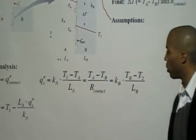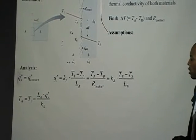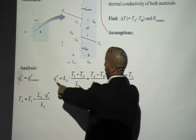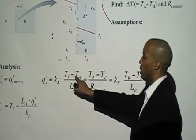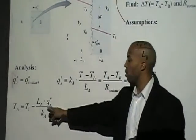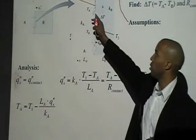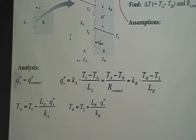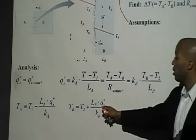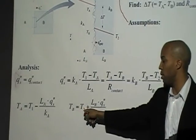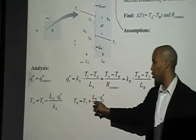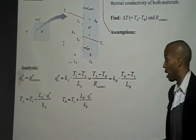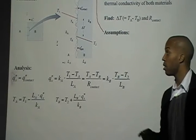Let me move to the side. The first thing we can do is use this first relation, Q double prime x equals KA times T1 minus TA over LA, and rearrange it to determine what TA is. Now we've determined what the temperature is on the left-hand side of the interface. We can do the same thing with the right-hand side of the interface, working the other way from T2, determining TB equals T2 plus this quantity here. So now we've determined TA and TB. Now we know TA minus TB, our delta T.